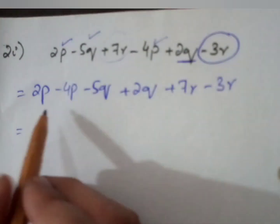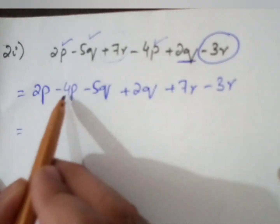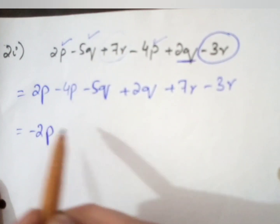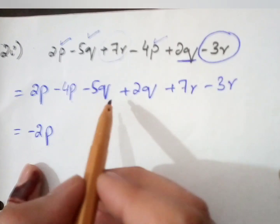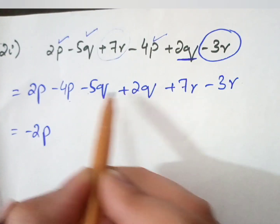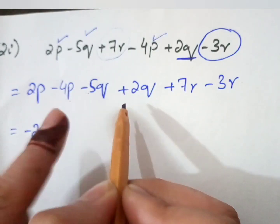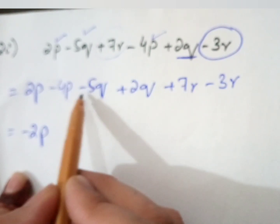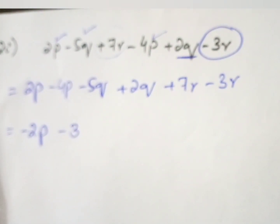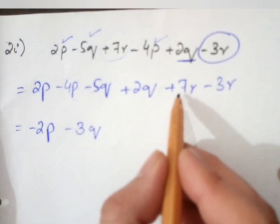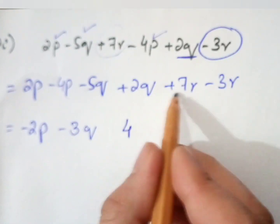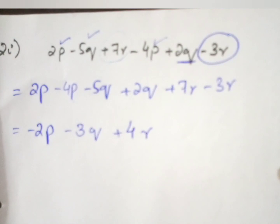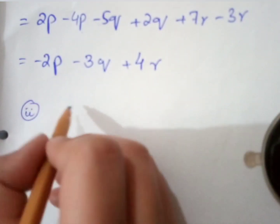Now we solve the terms with the same variable. For p: 2 minus 4 — opposite signs — subtract: 4 minus 2 equals 2, and the greater term 4 has the minus sign, so we get minus 2p. For q: minus 5 plus 2 — opposite signs — subtract: 5 minus 2 equals 3, and the greater term 5 has minus sign, so we get minus 3q. For r: 7 minus 3 equals 4, and 7 has the plus sign, so we get plus 4r.